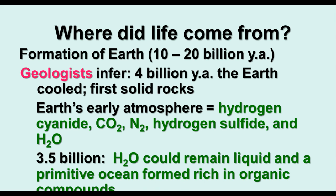The early atmosphere of Earth contained poisonous gases like hydrogen cyanide, nitrogen, hydrogen sulfide, and it also had some carbon dioxide and some water vapor. Notice what's missing here — there's no oxygen. So life as we know it today could not have existed on Earth shortly after its formation. About 3.5 billion years ago water could remain liquid, and so at that time a primitive ocean formed. The ocean itself was rich in organic compounds that formed from all of these substances, and lightning and heat and other factors caused chemical reactions to occur.